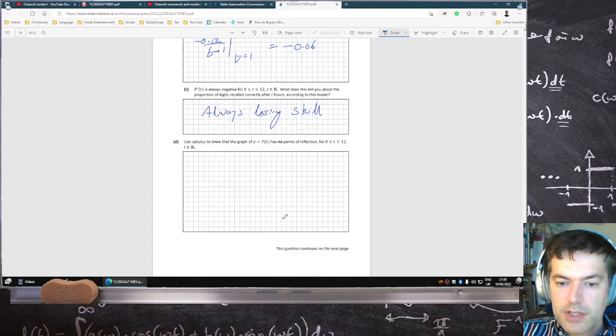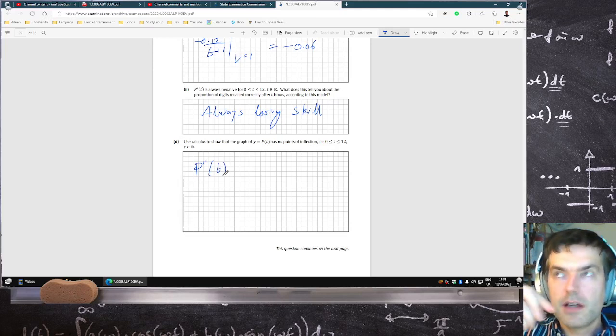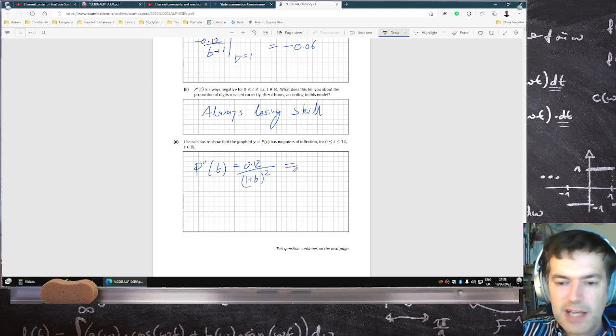Show that there's no inflection point, meaning the second derivative can't be 0. So if you calculate the derivative, bring the power down, reduce the power by 1. So that would be 1 plus T squared. That could never equal 0, so no inflection point.